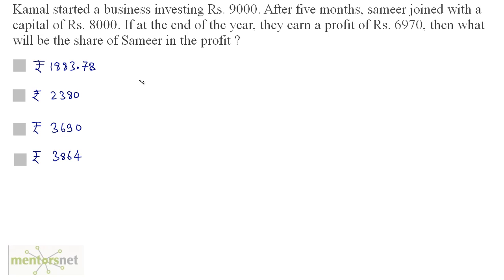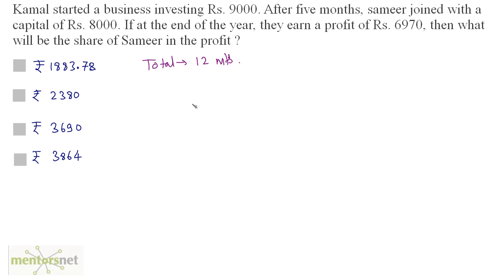Kamal started a business investing 9,000 rupees. After 5 months, Sameer joined with a capital of 8,000 rupees. If at the end of the year they earn a profit of 6,970 rupees, what will be the share of Samir in the profit? Since the profit is at the end of the year, the total time period is 12 months. Kamal did business for all 12 months. Samir came after 5 months, so he did business for 12 minus 5, that is 7 months.